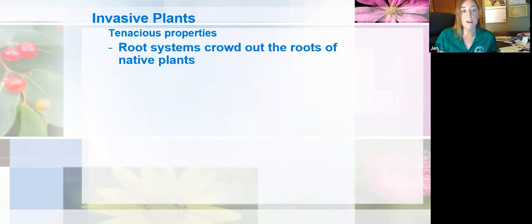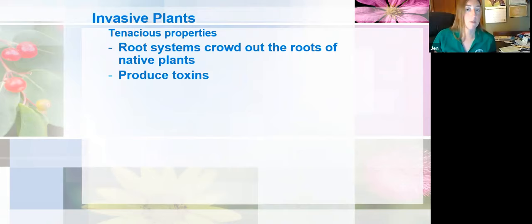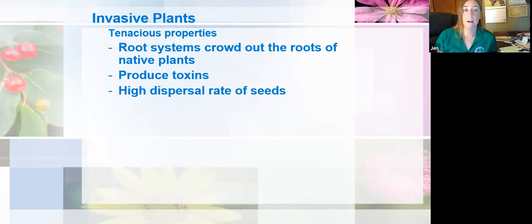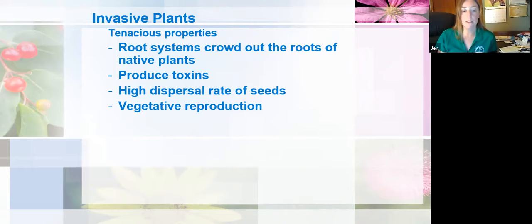Invasive plants, in order to grow where they're not normally found, have to have some tenacious properties to become such a problem. These include root systems that crowd out native plants, the ability to produce chemical toxins that prevent nearby plants from growing, and a very high reproduction rate. They can disperse massive amounts of seeds or have seeds viable in the soil for very long periods of time. Some don't even need seeds to reproduce — they can reproduce by vegetative pieces, and of course they're tolerant of a wide range of conditions.